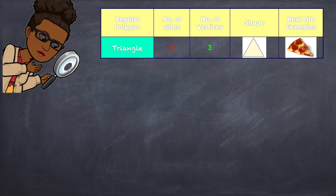Let's begin with the triangle. The word tri means three. Therefore, it has three sides, three vertices. Look at the real life example. I'm sure you've seen that before. A pizza is an example of a triangle.